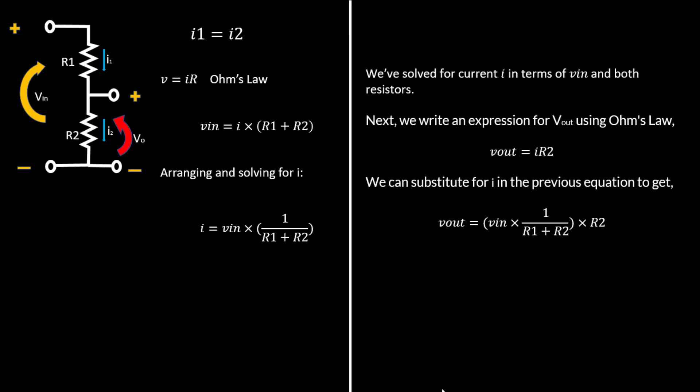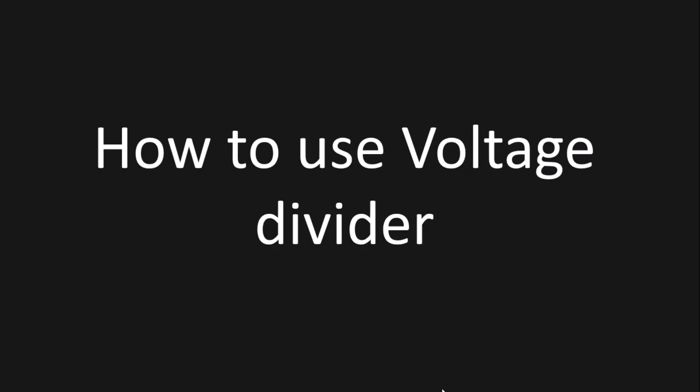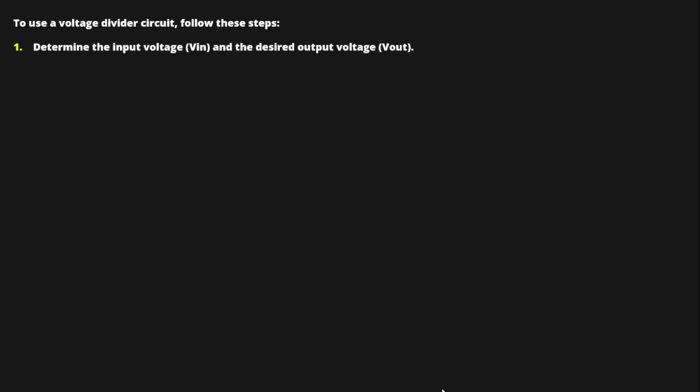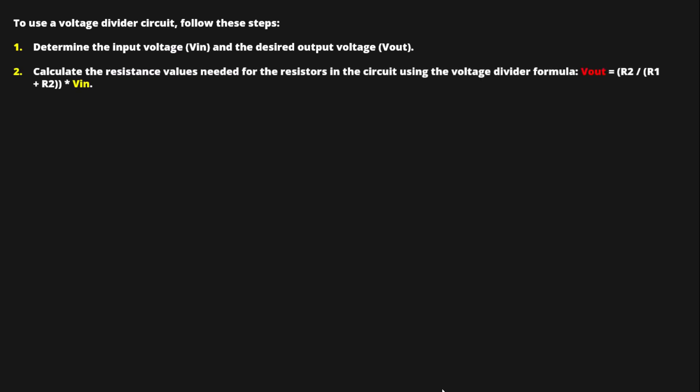Next, how can we use a voltage divider? To use the voltage divider circuit, follow these steps. First, determine the input voltage Vin and the desired output voltage. Then calculate the resistance values needed for the resistors using the voltage divider formula: Vout equals R2 divided by R1 plus R2, multiplied by Vin.